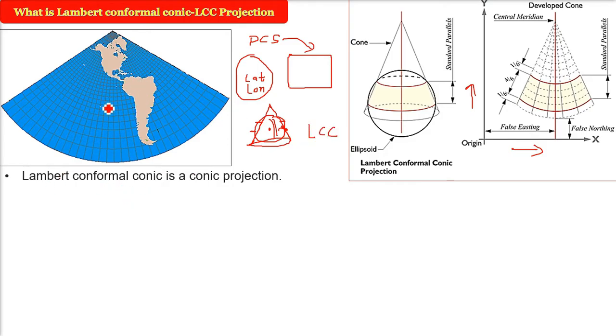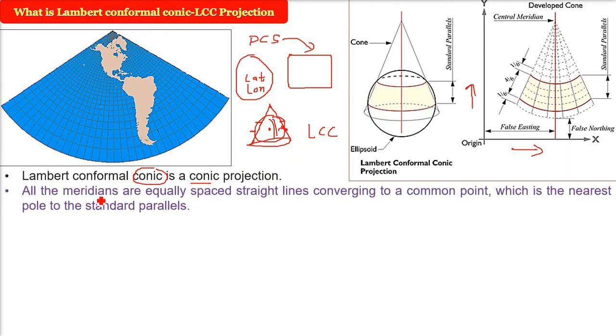LCC Lambert Conformal Conic is a conic projection, why? Because the cone is used as the developable surface. The cone is assumed to be going inside and then we develop it.